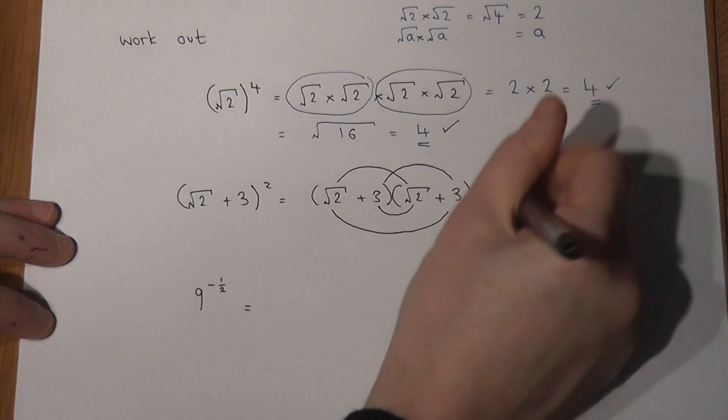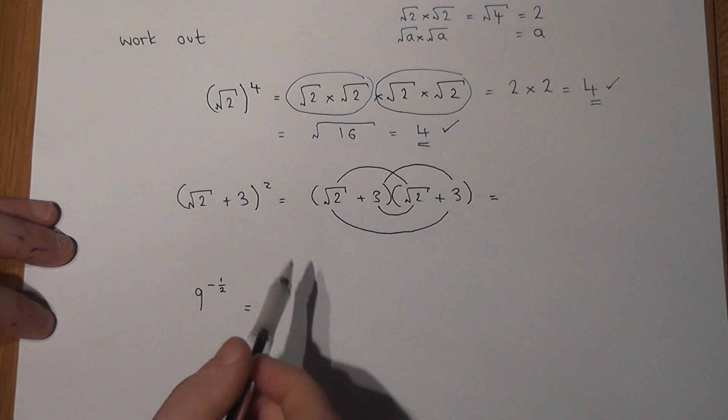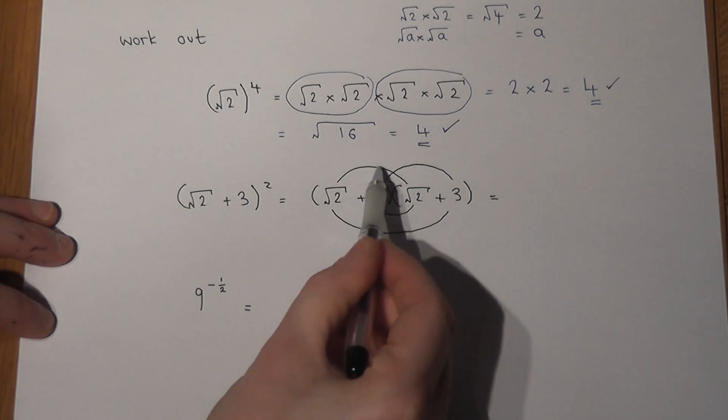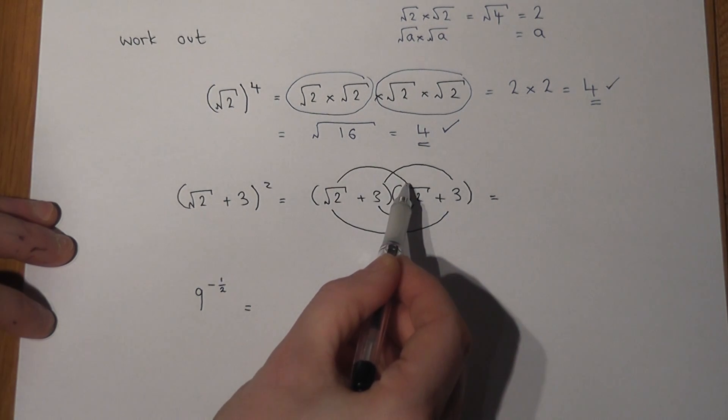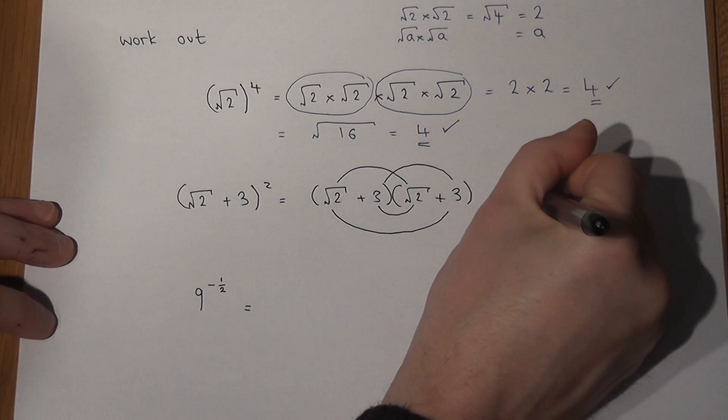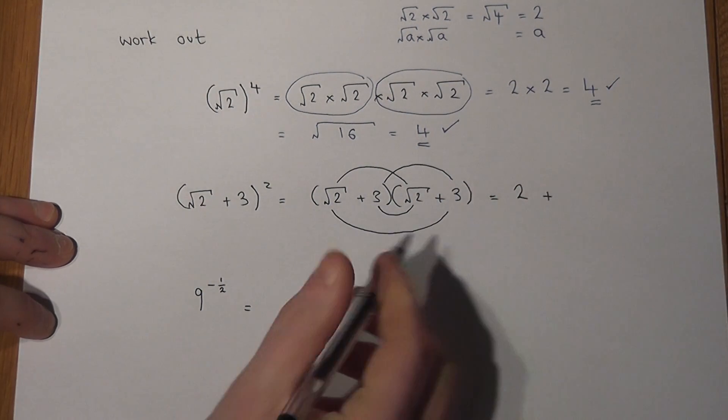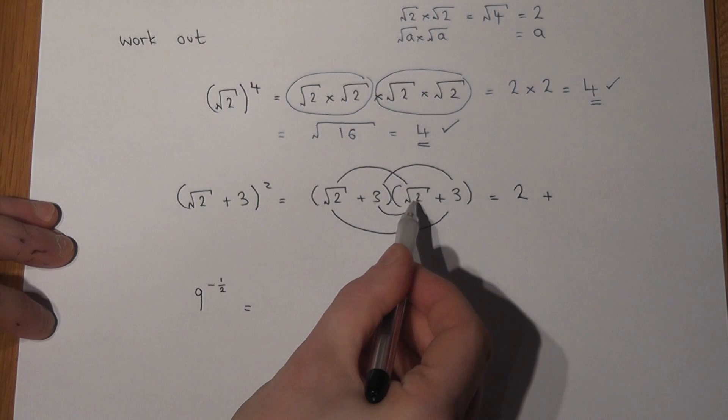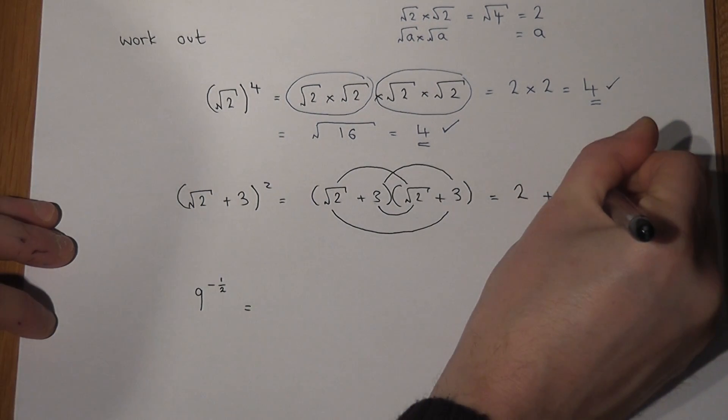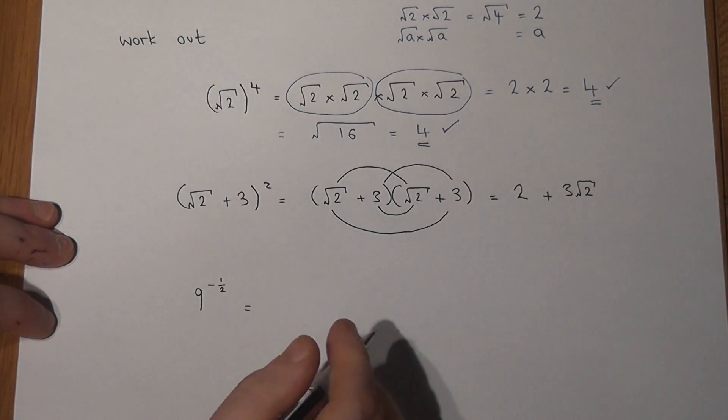Now then, we then work out each term really carefully. Root 2 times root 2 is root 4, which we know from above equals 2. Now then, 3 lots of root 2 just equals 3 lots of root 2. It's not root 6.